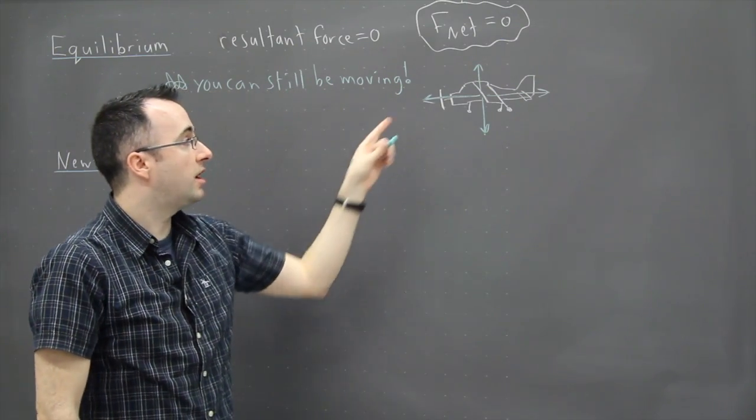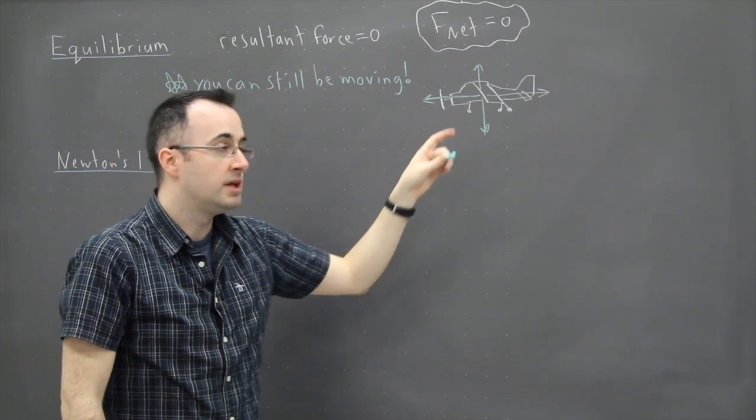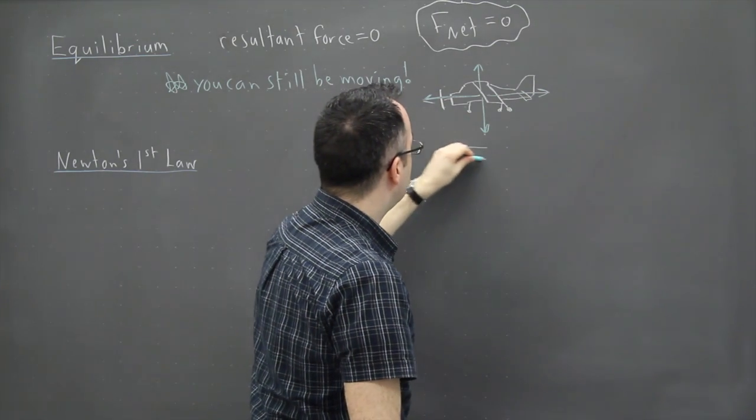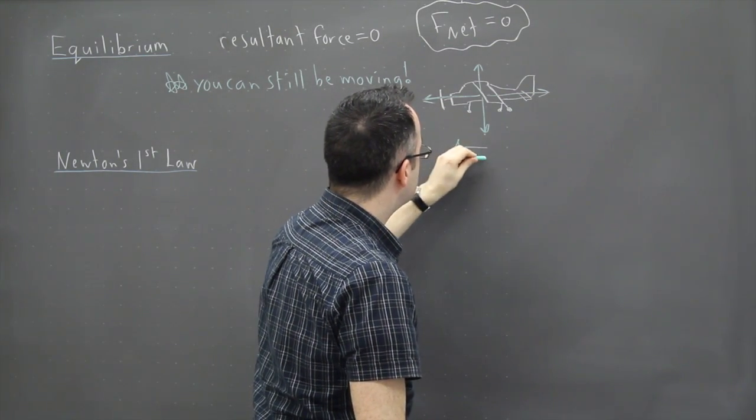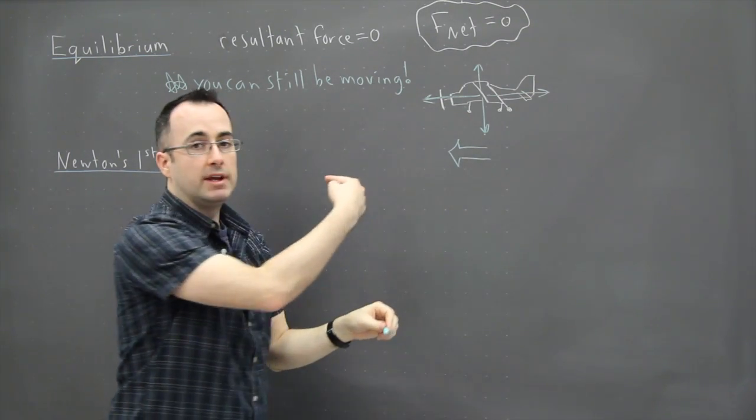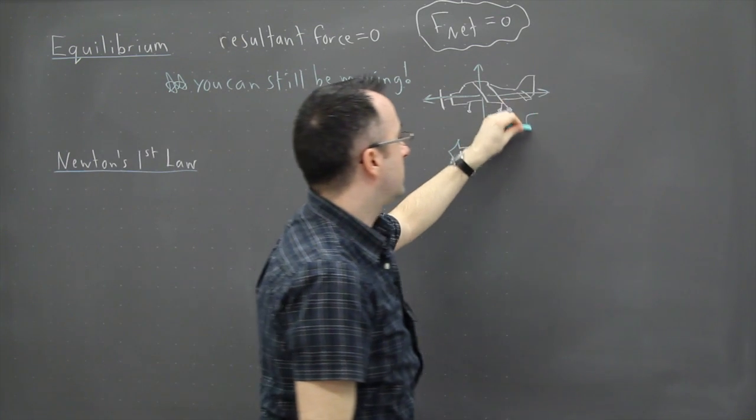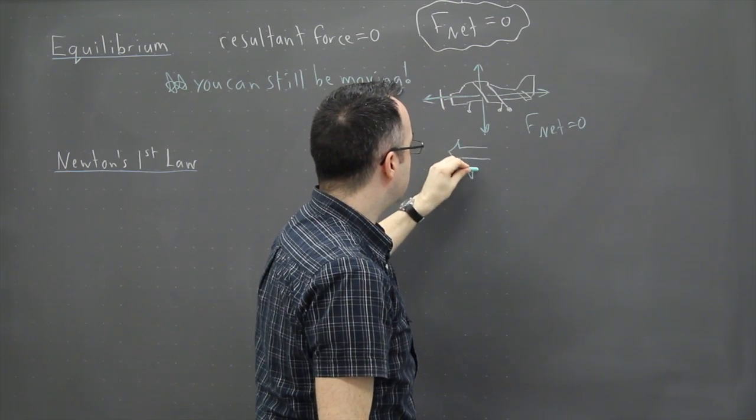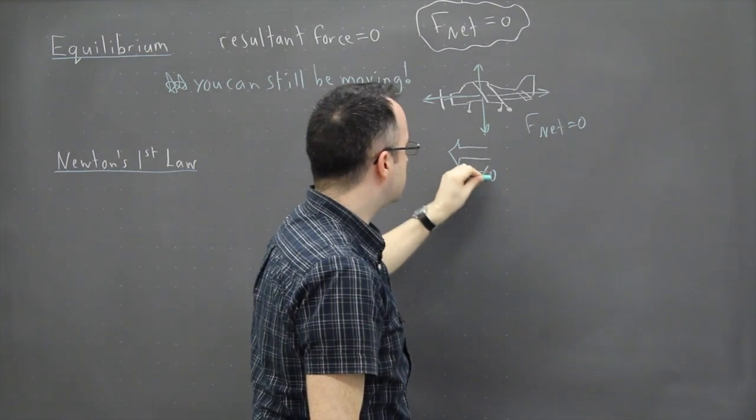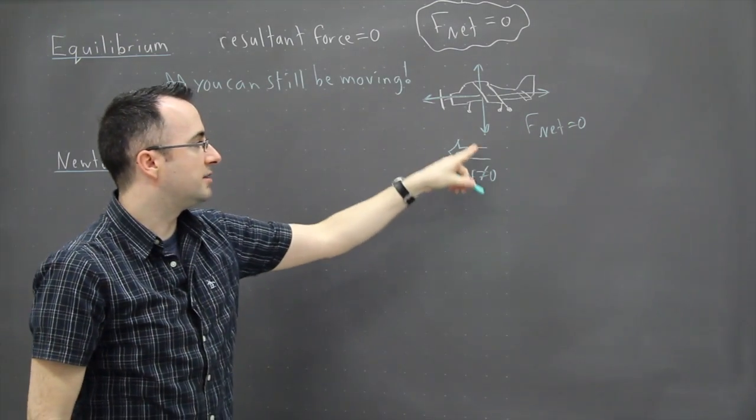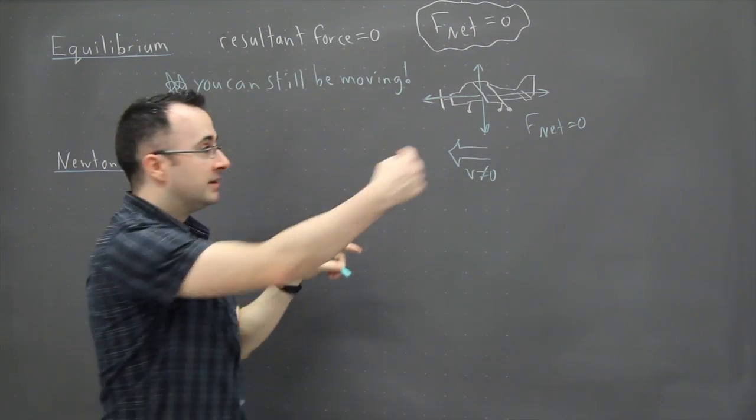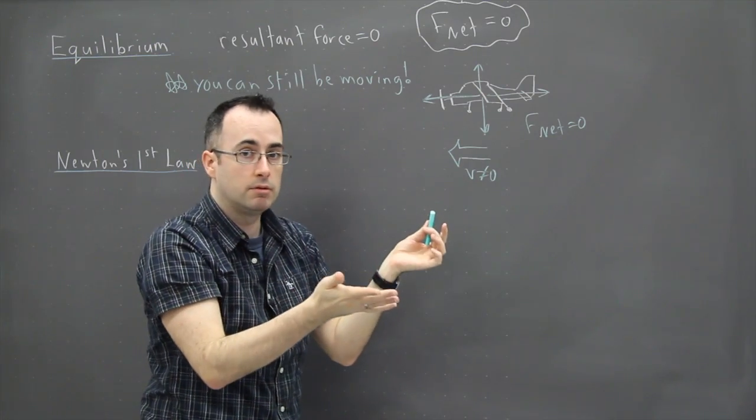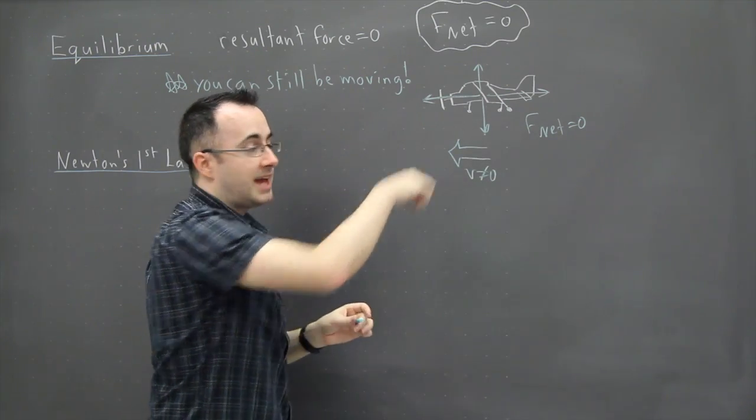When you're flying, you could be in equilibrium, meaning you're still moving. In this case we still have F_net equals zero, but here we have a V which is not equal to zero. We are actually moving with some speed, flying through the air happily, but our net force can be zero.